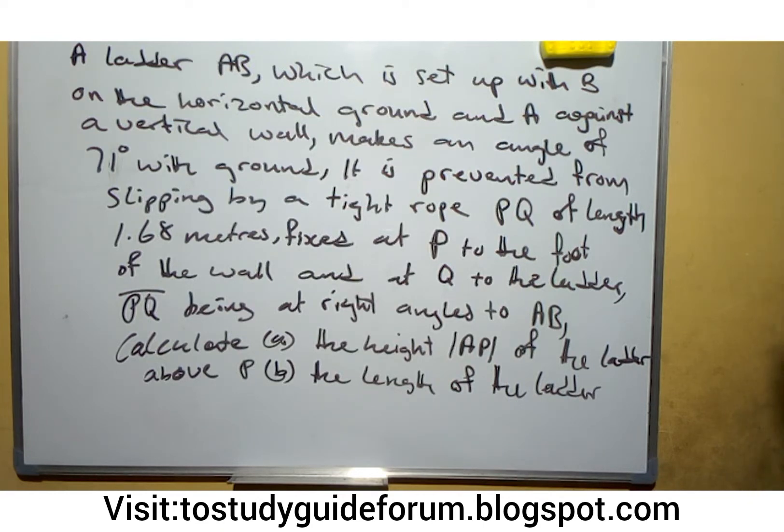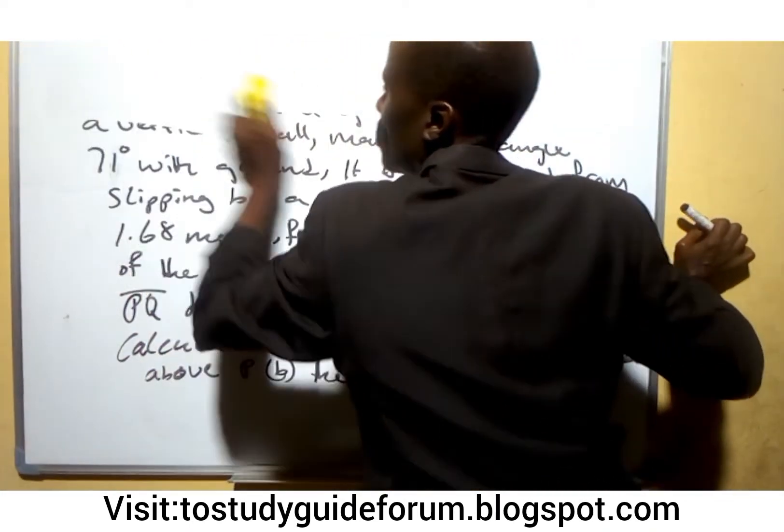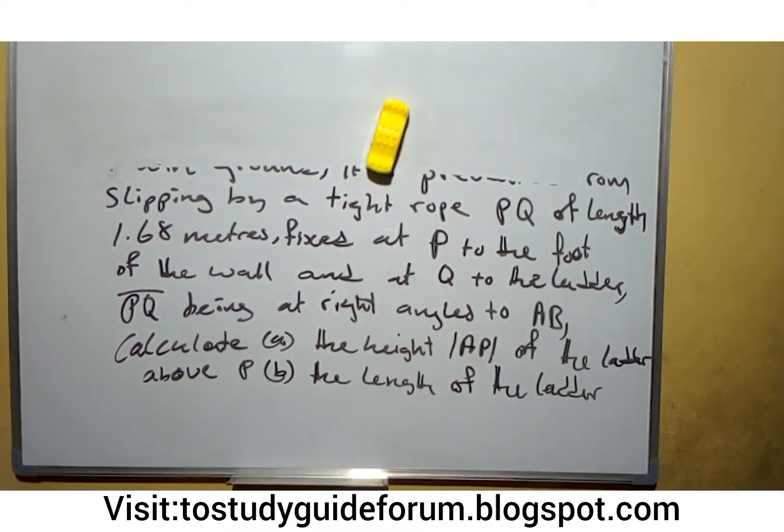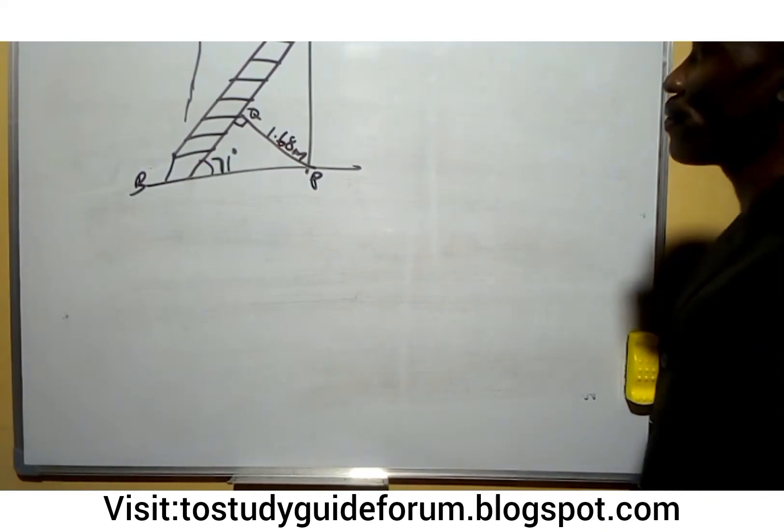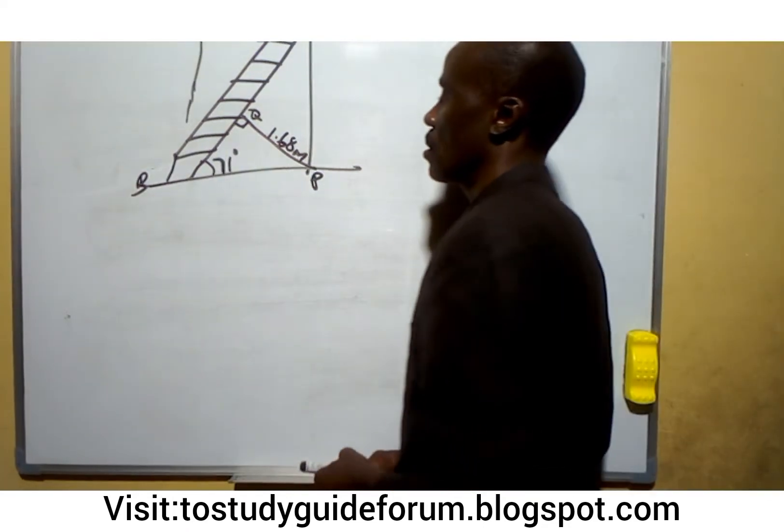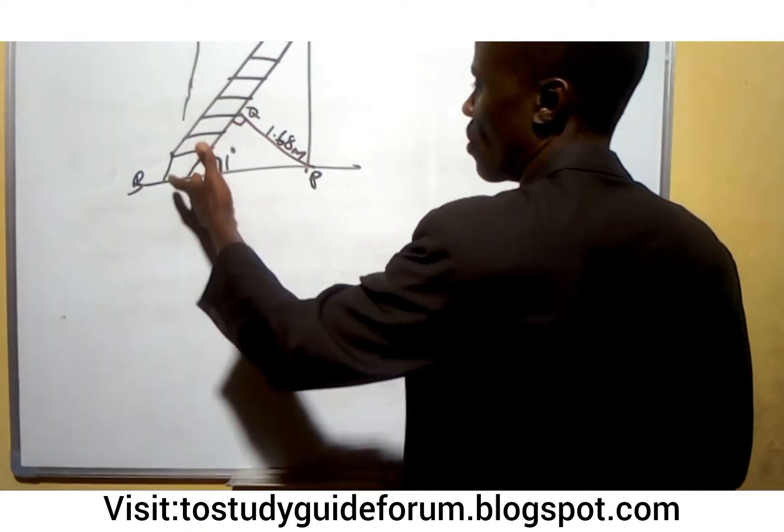So from what we have here, we are going to make a sketch of this. This is the sketch of all the questions. Here is the ground. This is P, this is Q, and this is the angle.